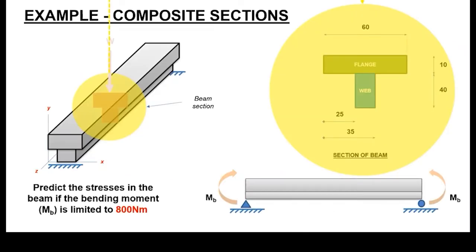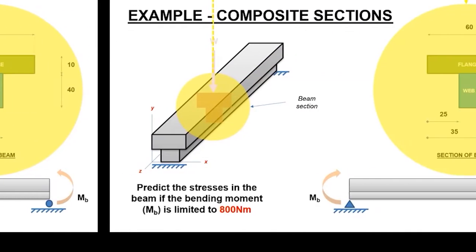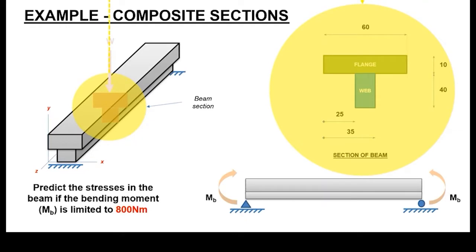We've been given a beam with a composite cross-section — more or less a T-section. We're asked to predict the stresses in the beam, and remember that for a beam structure it will be under two states of stress: compressive and tensile. We've been given a bending moment limited to 800 Nm, along with the cross-sectional dimensions, and we're going to use this information to calculate the value of I.